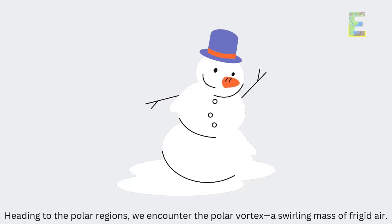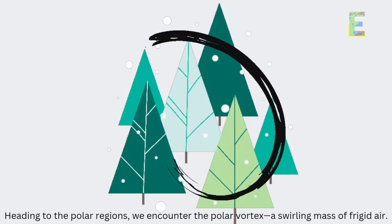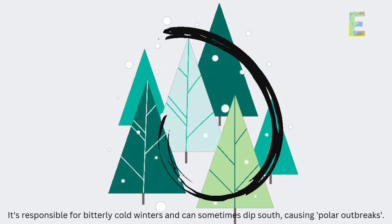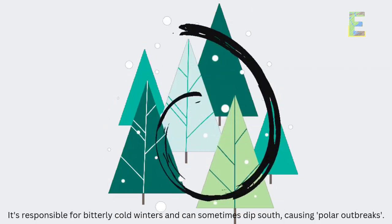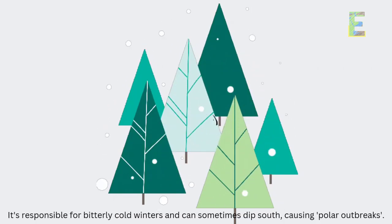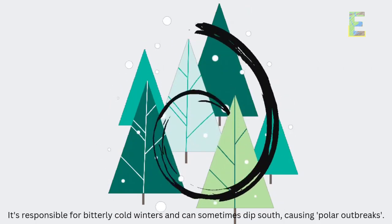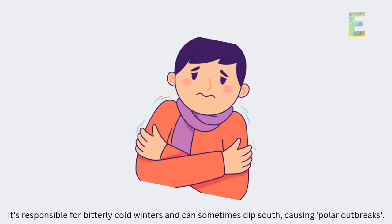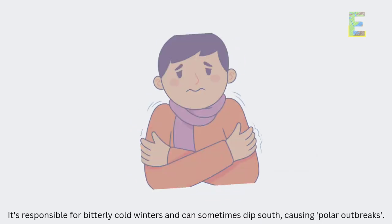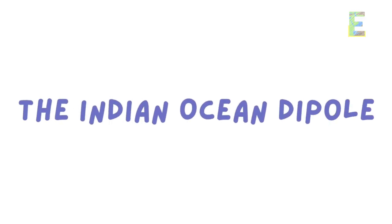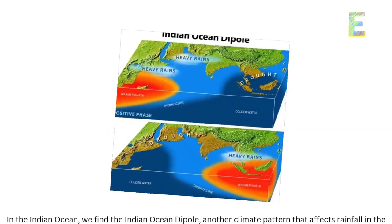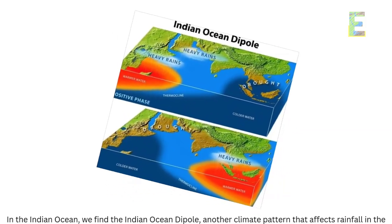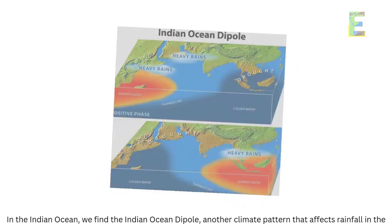The Polar Vortex — heading to the polar regions, we encounter the polar vortex, a swirling mass of frigid air. It's responsible for bitterly cold winters and can sometimes dip south, causing polar outbreaks.